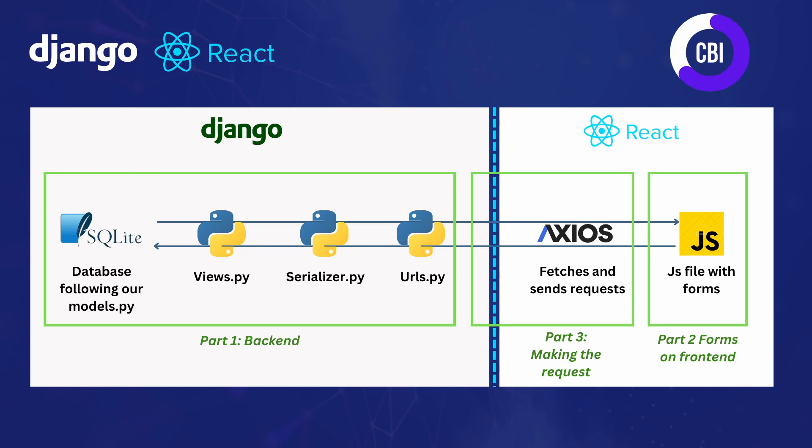Next, that serialized data is used inside our views.py file and then sent to our database. And of course this process works both ways — if we post a request it goes from the frontend to the backend, but if we want to get information displayed on screen it goes the other way, from our database all the way to the frontend JS file.